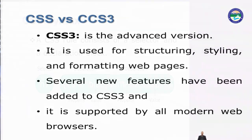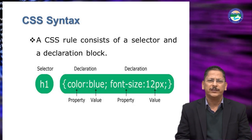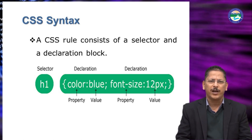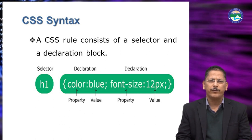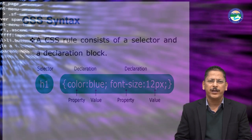Here is a CSS command defining the property of heading 1. The selector is h1 and we have declared two properties: color equals blue and font-size equals 12px. Whenever we use h1, the heading 1 color will always be blue and the font size will be 12px. These properties are defined once and applied every time h1 is used.